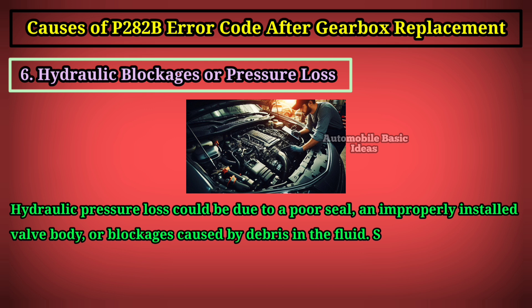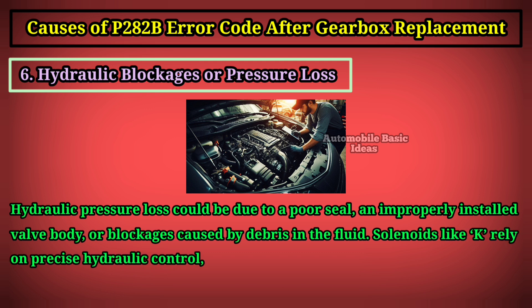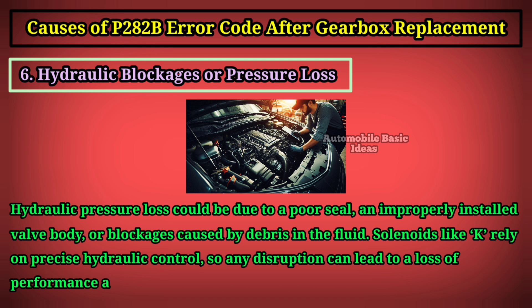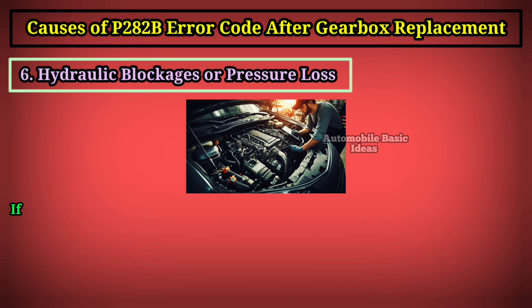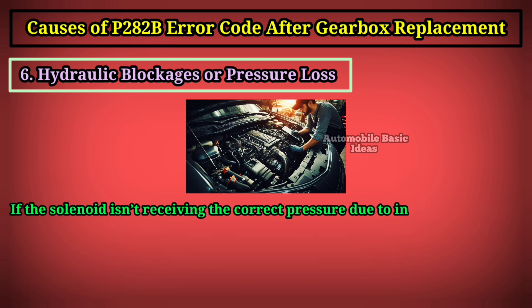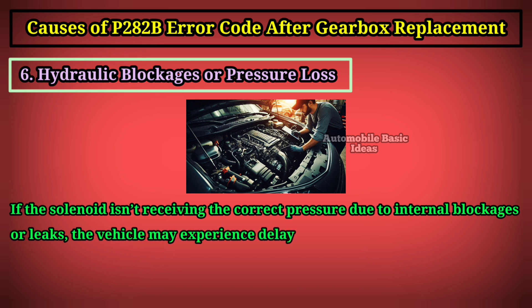Hydraulic pressure loss could be due to a poor seal, an improperly installed valve body, or blockages caused by debris in the fluid. Solenoids like K rely on precise hydraulic control, so any disruption can lead to a loss of performance and the P282B code. If the solenoid isn't receiving the correct pressure due to internal blockages or leaks, the vehicle may experience delayed or rough shifting.